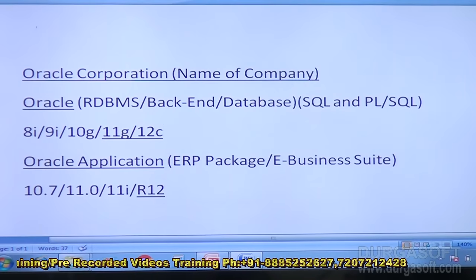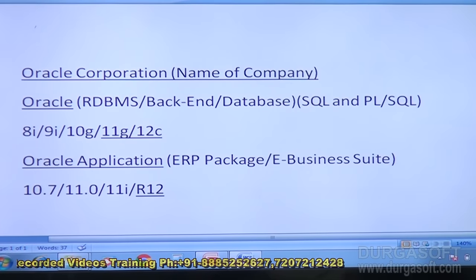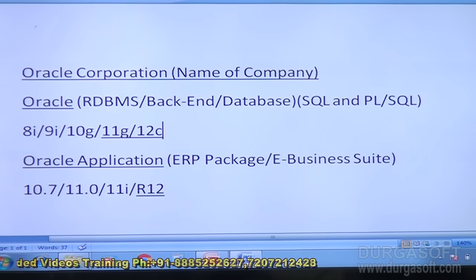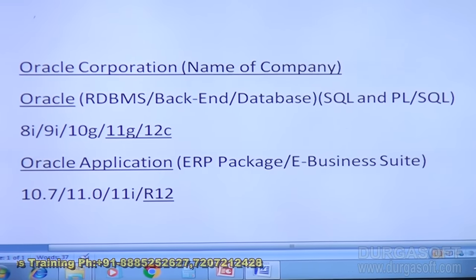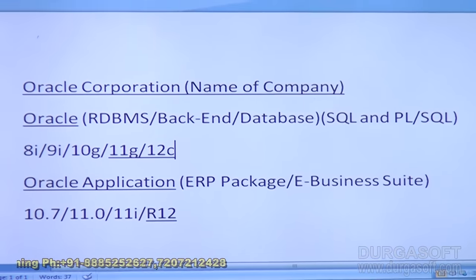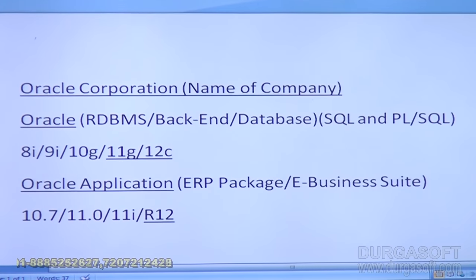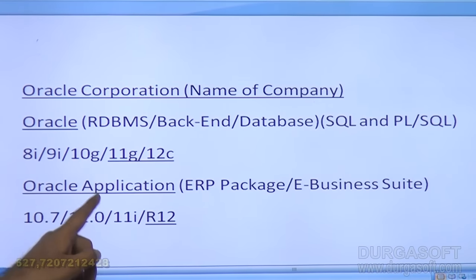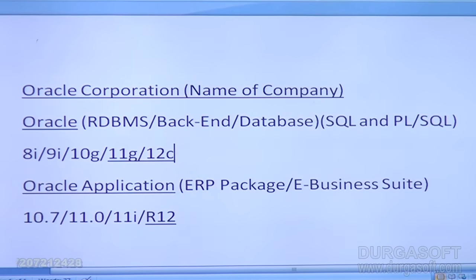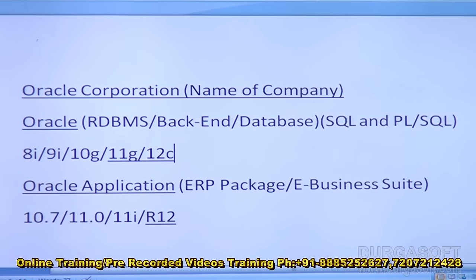Students often get confused — don't get confused please. 11G belongs to Oracle the database. 11.0 and 11i are part of Oracle applications. These are different products. Now let me give you a simple example so that based on your understanding we can go further.